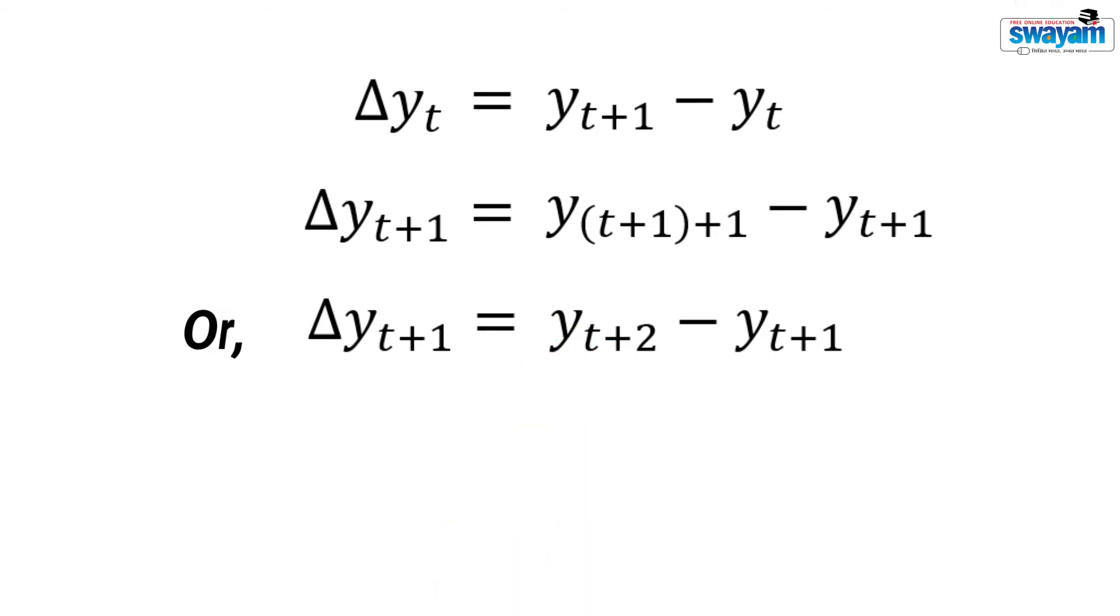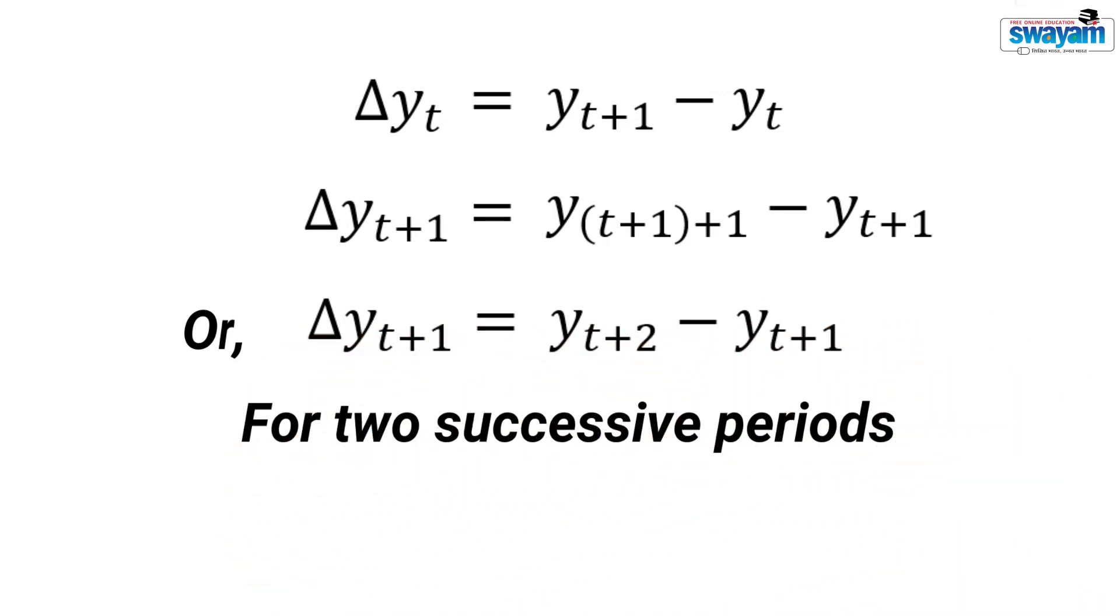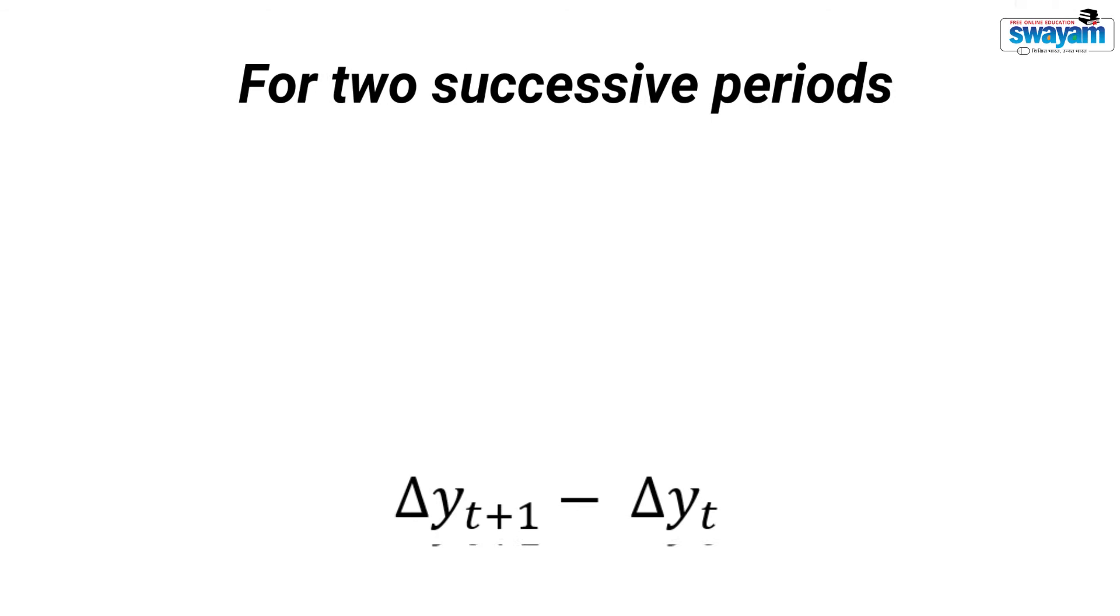If we want to find the change of y for two successive periods from t to t plus 2, we may write delta yt plus 1 minus delta yt. Let us simplify this further.